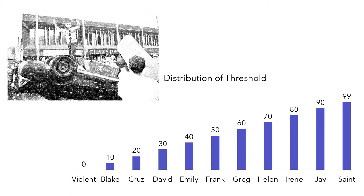Mr. Violent has a threshold of zero — he will riot even if no one else does. He starts throwing things and smashing windows of retail stores. Then another protestor with a threshold of one joins Mr. Violent. Together, they meet another protestor's threshold of two. One after the other, the entire crowd ends up joining the riot, with Mr. Saint working very hard to remain calm and peaceful.